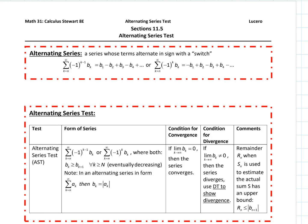Let's talk about another test: the alternating series test. Section 11.5. An alternating series is a series whose terms alternate in sign — they have something like negative one to the k minus one times b sub k, where b sub k is the magnitude, the size of the terms without the alternating sign. You could also start with negative one to the k or negative one to the k plus one. B sub k itself is the absolute value of the terms without the switch.